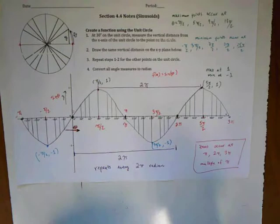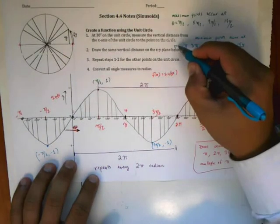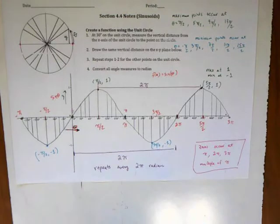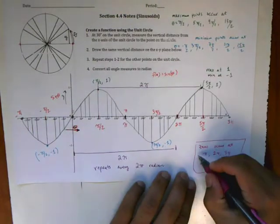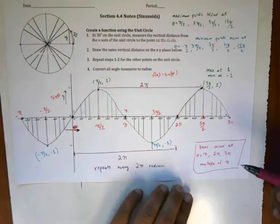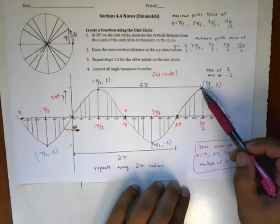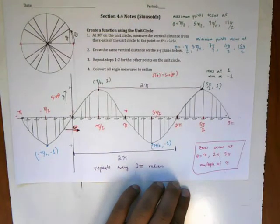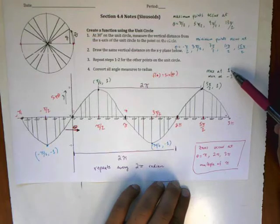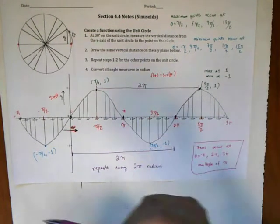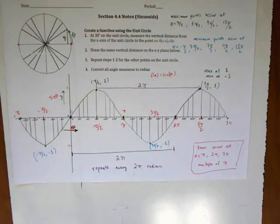Along those same lines, the minimum points occur at theta equals any of these values, and the zeros occur when theta equals any of these values down here. So there's a difference between the points themselves, which there are infinitely many, and the maximum values—there's only one maximum value, that's 1. There's only one minimum value, that's negative 1, but it occurs an infinite number of times.